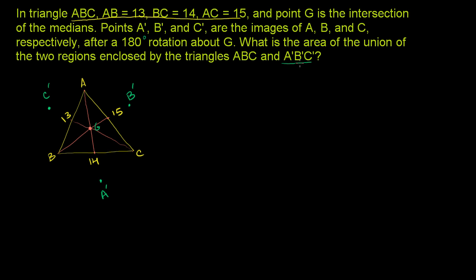So if we want to draw triangle A prime, B prime, C prime, it would look something like this. This line should be parallel to that line, because it's the line connecting A and B rotated 180 degrees. This line should be parallel to this one, and this line should be parallel to that one. So they're asking for the area of the union of the two regions enclosed by the triangles — essentially the area of this entire star, this six-pointed star, a slightly tilted Star of David.